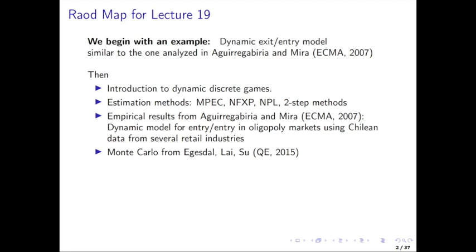Finally, we're going to come back to compare how you can estimate the same model and study the properties of these different estimators in the Monte Carlo exercise done by Pesendorfer and Schmidt-Dengler. There's also lots of Monte Carlo evidence in Aguirregabiria, Barea, and Mira that's very exciting, but doesn't have MPEC. So we will take the results from there, and it also discusses some of the recent issues that have been raised with MPEC for certain classes of games where you have instability of the NPL mapping.